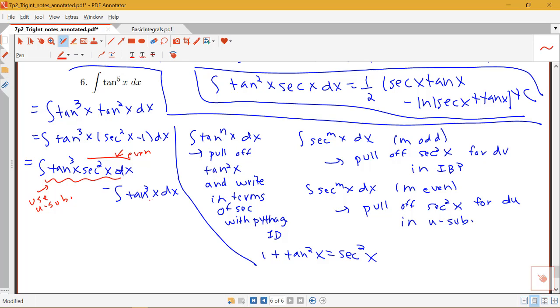And now this tangent cubed, well, that's another just power of tangent. So I'm going to repeat this technique of pulling off tan squared and replacing the tan squared part with secant squared minus 1.